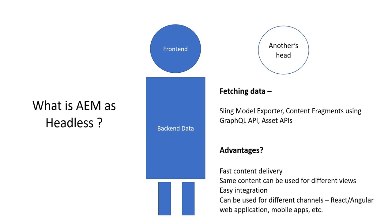And of course we have advantages. We have fast content delivery. There are various multiple channels — we can utilize the same API. The API is nothing but a URL, like a REST-based URL, but in this case we are going to use GraphQL API, and you will have the URL and we will get the data.